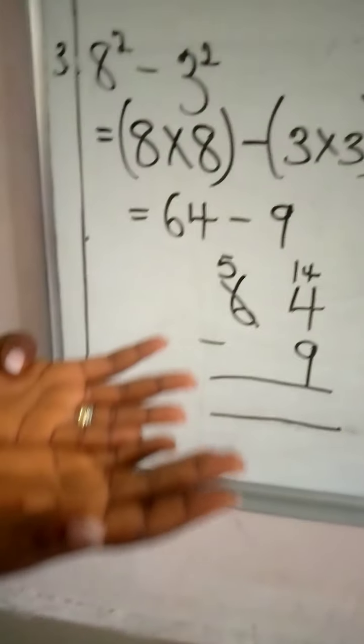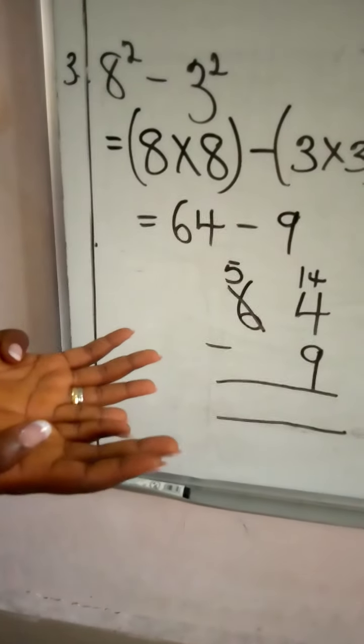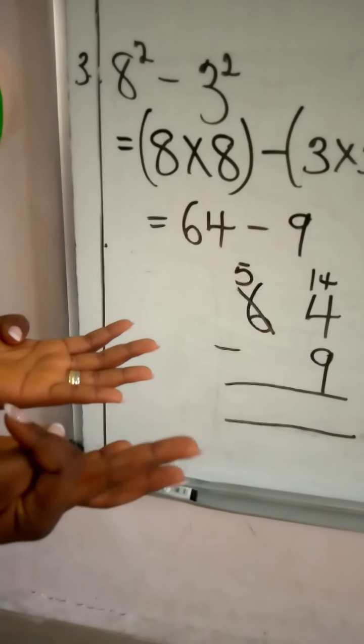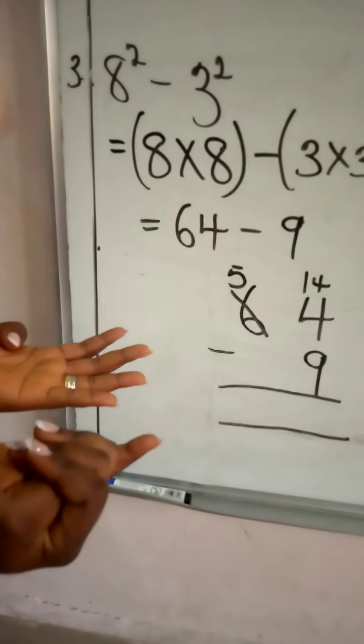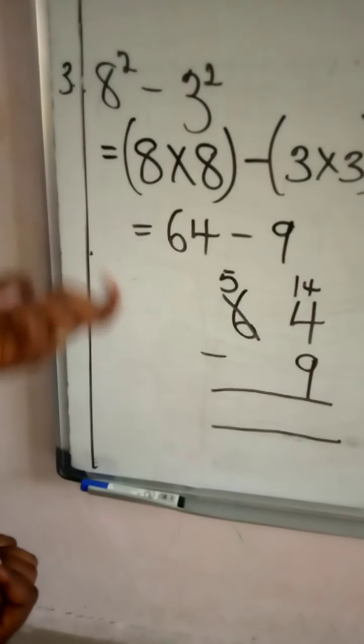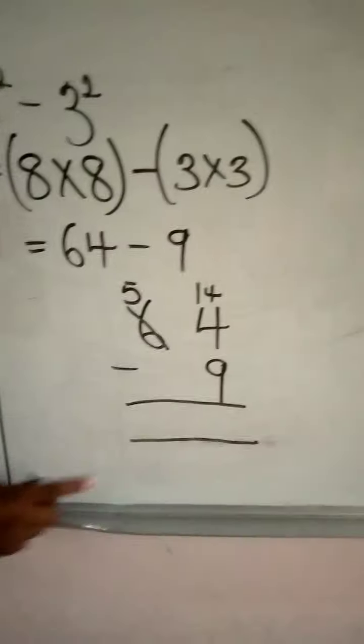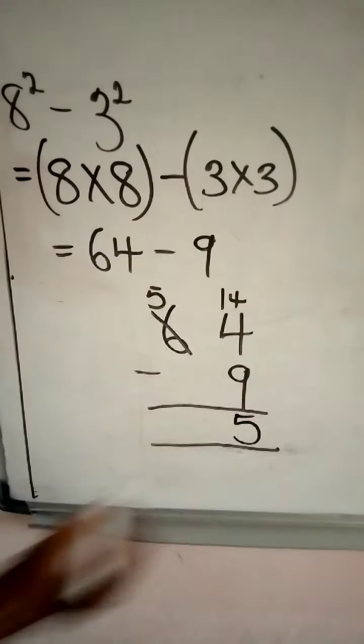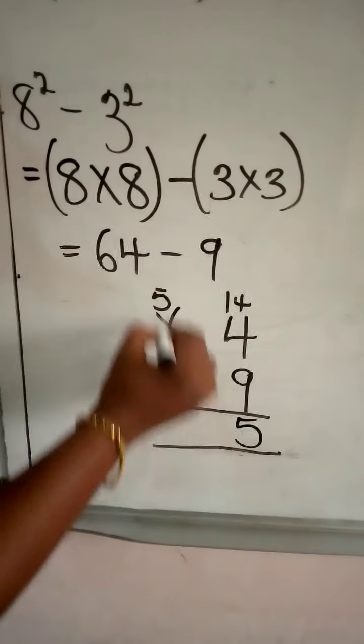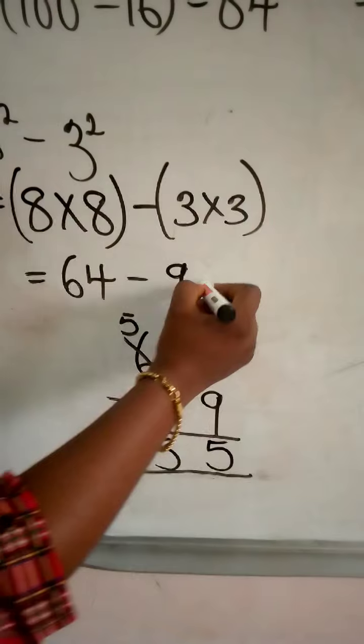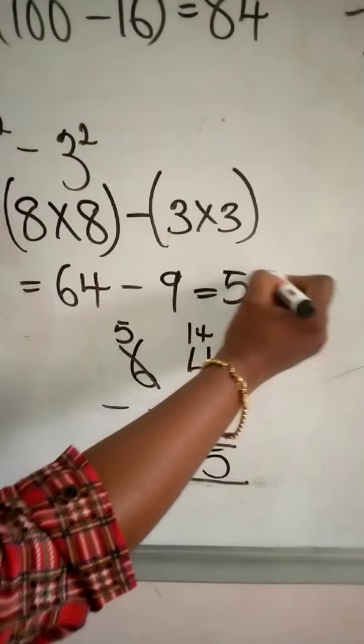9 fingers and 14 in your head. So you count what? Backwards. 14, 13, 12, 11, 10, 9, 8, 7, 6, 5. So we have what? 5. And this is what? 5 take away nothing. We have 5. So my answer is 55.